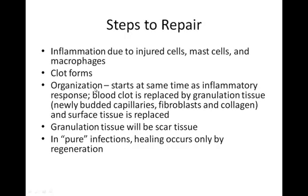Then the process of organization will occur. Organization involves new blood vessels forming — capillaries growing into that area — and fibroblasts, which are already in the connective tissue, creeping into the area and laying new collagen fibers down, replacing the area with collagen fibers and new connective tissue. This is basically fibrosis occurring. New soft tissue is laid down, called granulation tissue, which will eventually become scar tissue. Sometimes we don't see the scar tissue with our naked eye, but it is there.